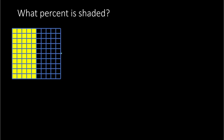So the question is, what percent is shaded? If there are 100 little squares total, we have to figure out how many are shaded. Each column has 10 in them, so this is 10, 20, 30, 40, 50. We have 50 out of 100 shaded. As a fraction, that would be 50 over 100, and as a percent, that is 50%.